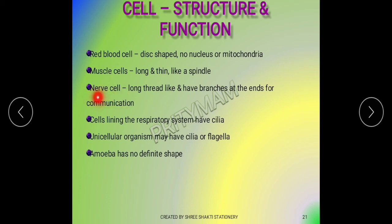Nerve cells are long, thread-like, and have branches at the end for communication. The cells lining the respiratory system have cilia — short hair-like organs used to sweep dust out. Unicellular organisms have cilia or flagella. Flagella are long hair-like structures used for locomotion.